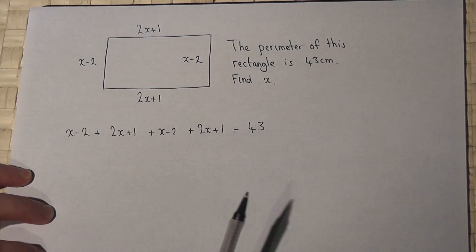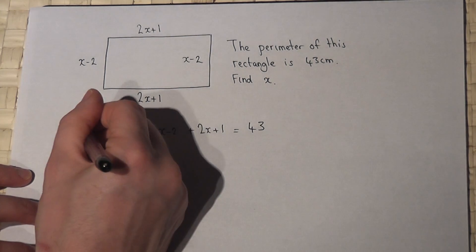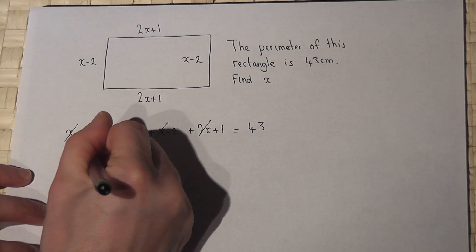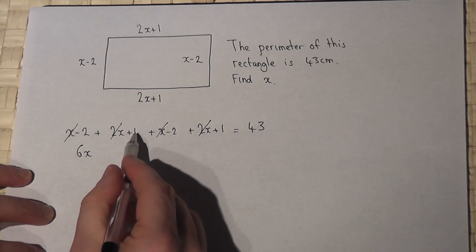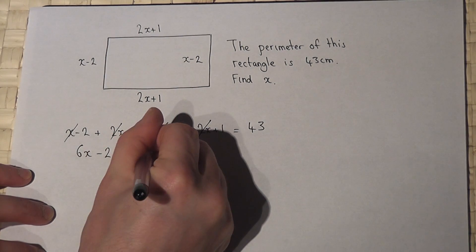I can then simplify the left-hand side. x, 2x, x, 2x becomes 1, 2, 3, 4, 5, 6, that's 6x. Minus 2 minus 2 plus 1 plus 1 is negative 2, and that must equal 43.